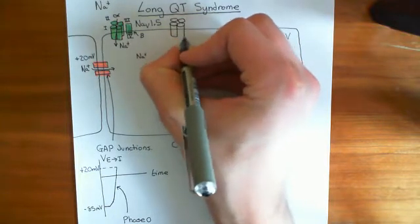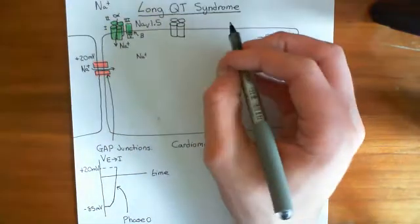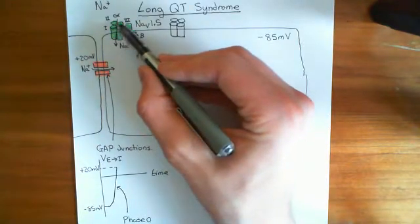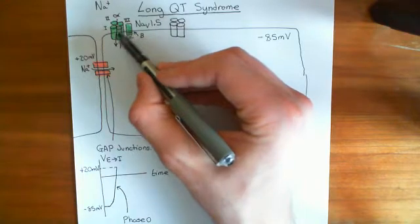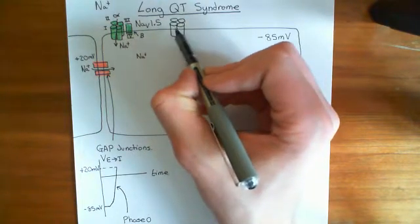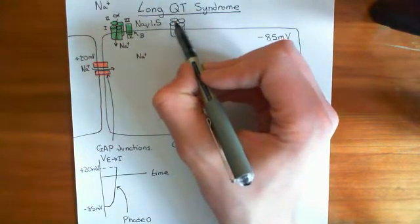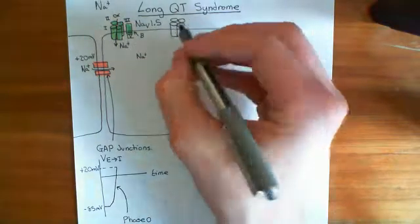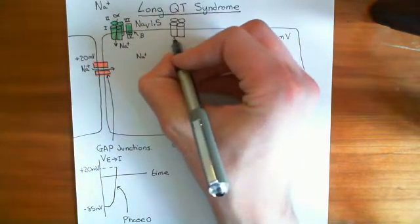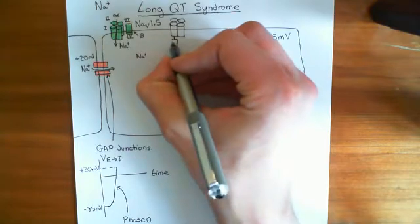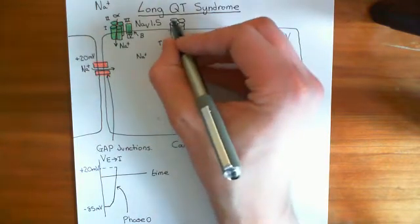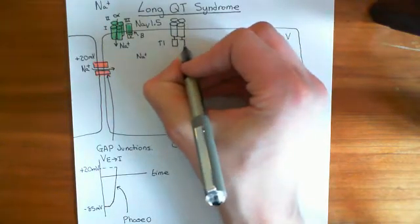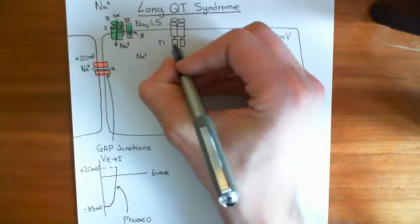Voltage-gated potassium channels differ in structure from voltage-gated sodium channels. In the case of voltage-gated sodium channels, a single polypeptide makes up all four cylindrical domains. Whereas in the case of potassium channels, these four cylinders which make up the pore-forming unit are separate polypeptides. On the intracellular aspect, they all have what are known as a T1 tetramerization domain, and these tetramerization domains bind together to make a tetramer, which holds the potassium channel together.